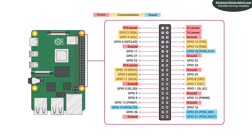You have the SPI, I2C, and UART, which are very commonly used in embedded systems. You also have a couple of PWM pins which can be used to drive motors or some other actuators. Unfortunately, as of today, the Raspberry Pi boards don't have a hardware ADC on them, but the Raspberry Pi Pico changes that.